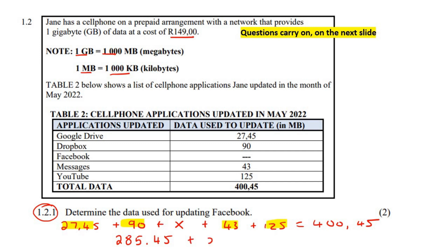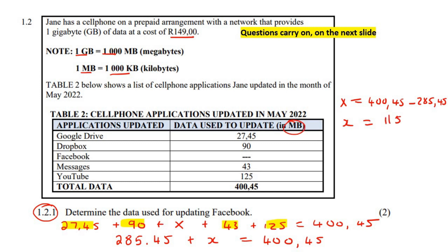Then we're still going to say plus X equals 400.45. There are different ways of handling this next part, so you must do what's comfortable. But what you eventually want to end up with is that X is going to be equal to 400.45 minus 285.45. And if you do that, you should end up with 115 — and remember the units — megabytes, or MB. So that is the data for Facebook.